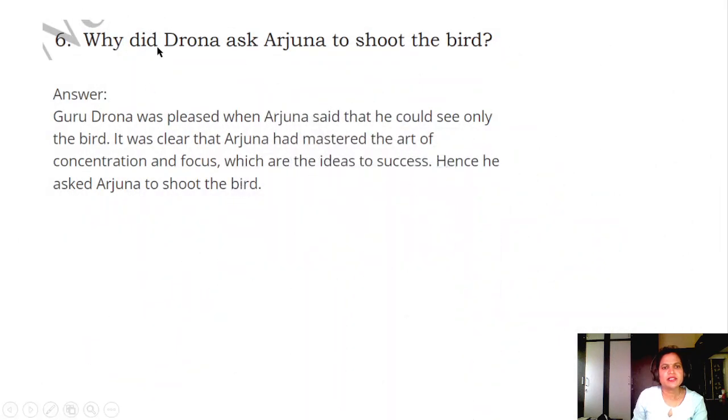Question 6: Why did Drona ask Arjuna to shoot the bird? Answer: Guru Drona was pleased when Arjuna said that he could see only the bird. It was clear that Arjuna had mastered the art of concentration and focus, which are the keys to success. Hence, he asked Arjuna to shoot the bird.